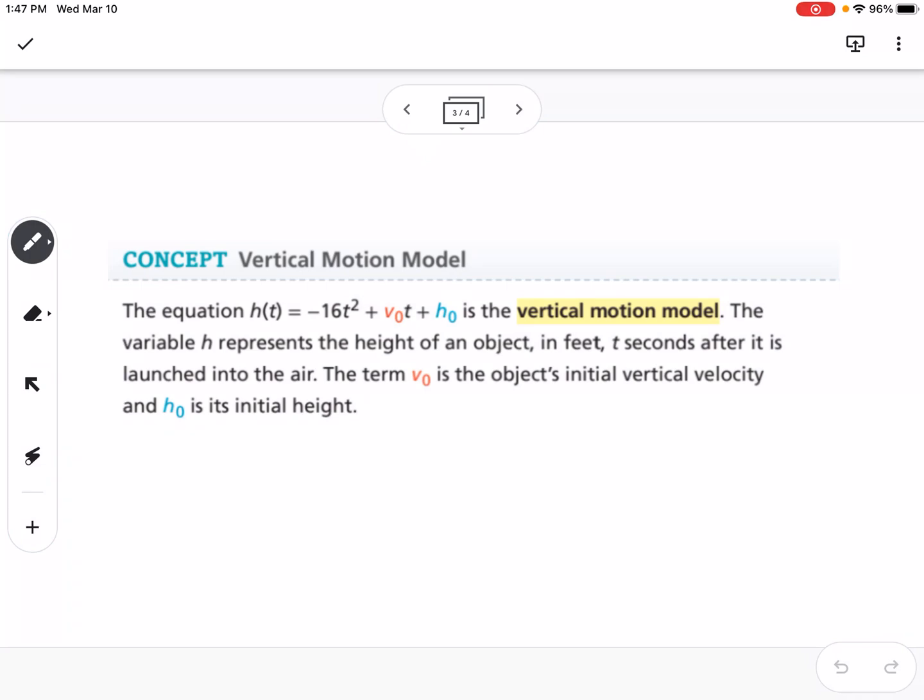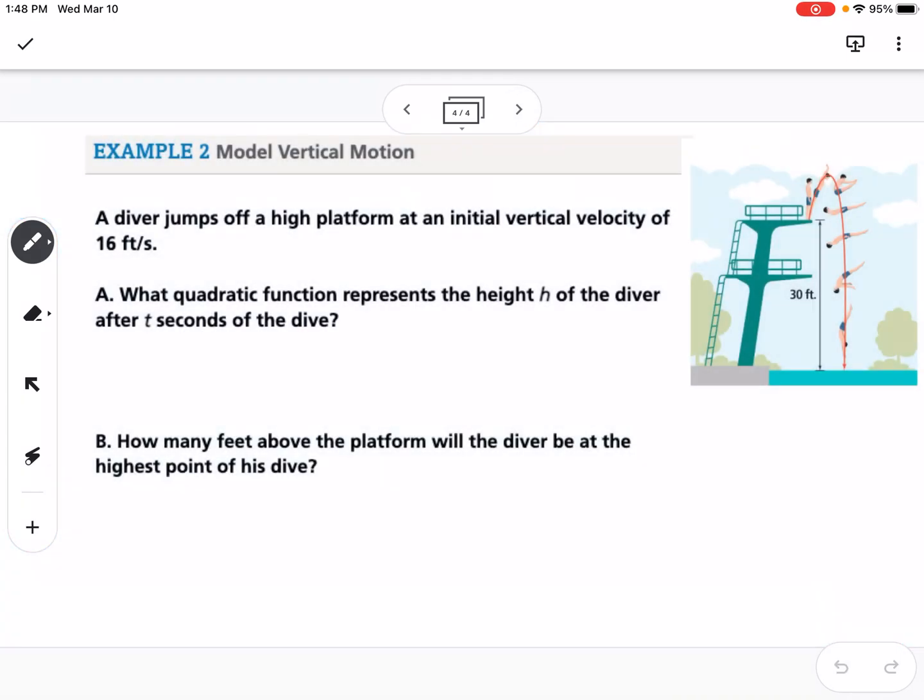The next concept is vertical motion model, so we can use this basic formula anytime we're talking about vertical motion. So v sub 0 is our initial velocity, and h sub 0 is its initial height. So we can fill in those values to calculate the height of an object at a certain time.